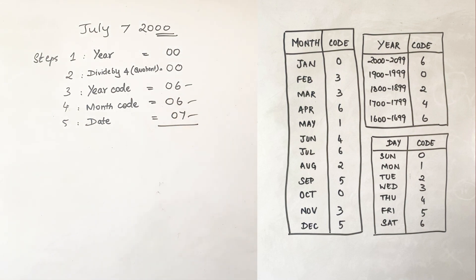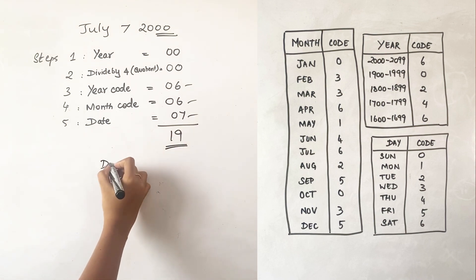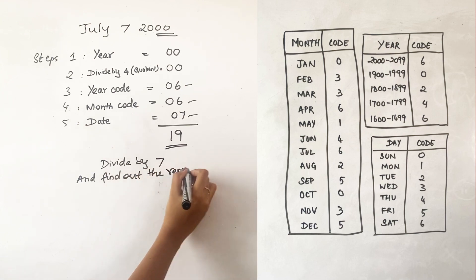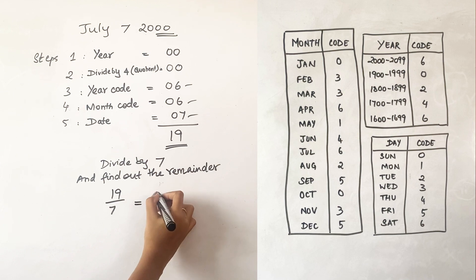Moving on to the last step, we are going to add all of these: six plus six plus seven, which is 12, plus seven, which is 19. Now please listen carefully what we have to do with this number. Whatever sum you're getting, you need to divide it by seven and then see the remainder. So we are going to divide 19 by 7 and find out what is the remainder when we divide this sum by 7.